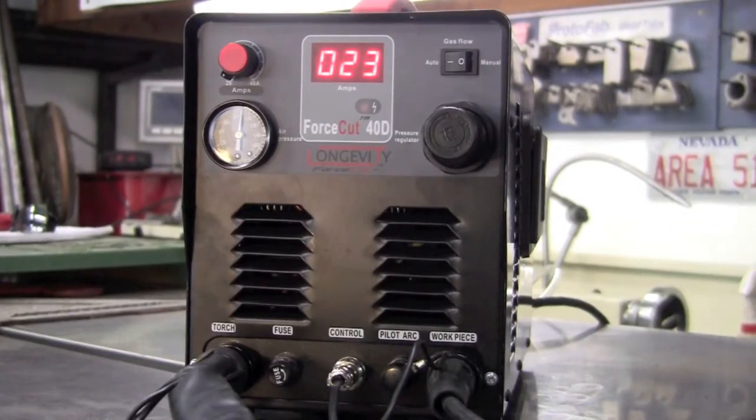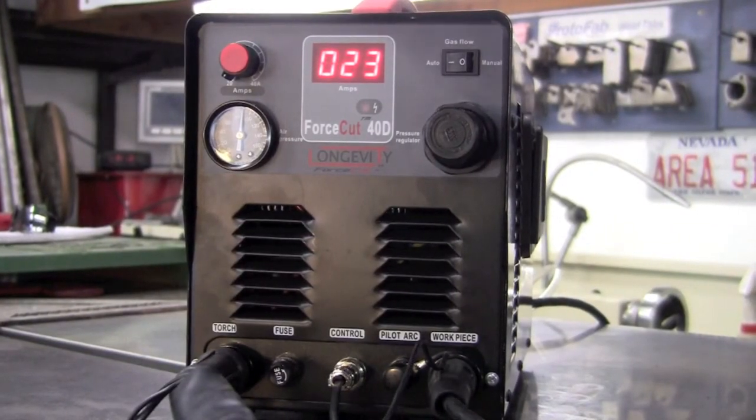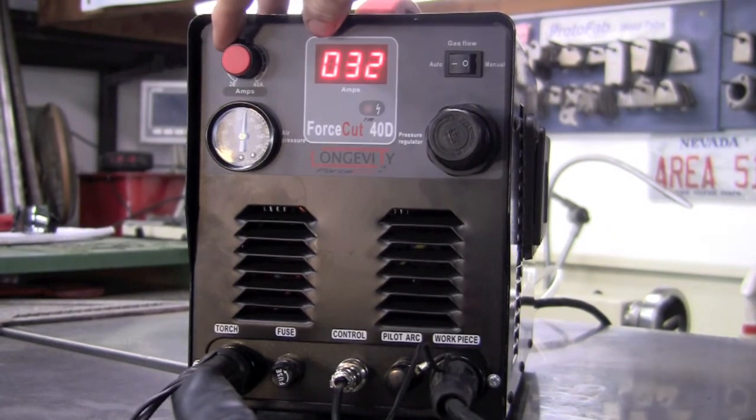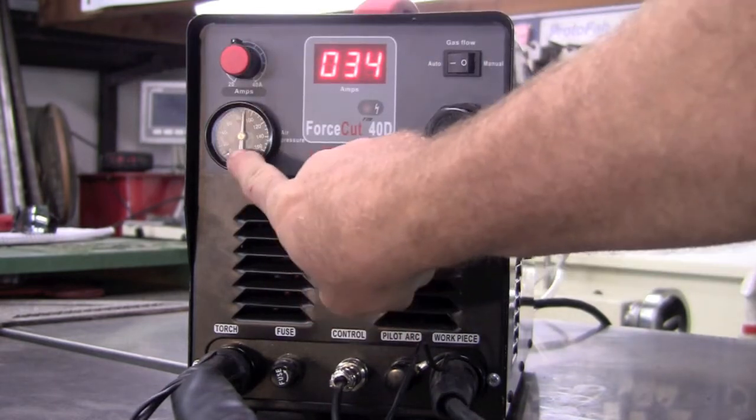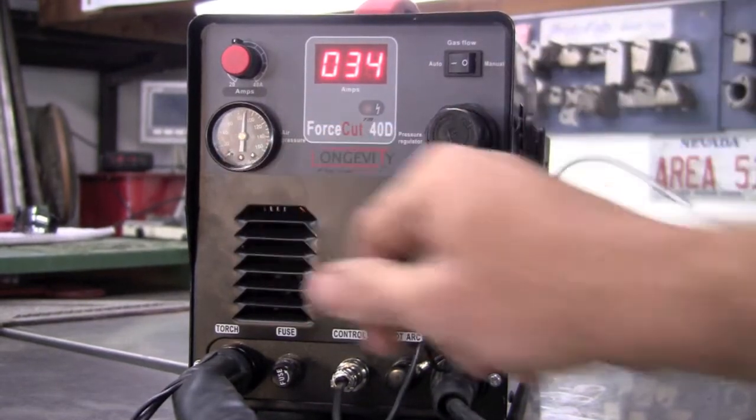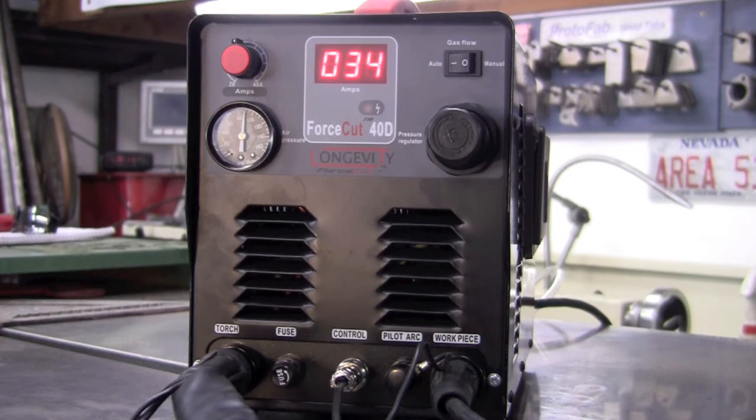So, the front of the panel on the 40D is real simple. You have your amperage adjust, anywhere from 20 to 40 amps. You have your air pressure, which standard air pressure that you want to cut with is about 80. When you're trying to use max capacity of the machine, it's always good to maybe jump it up to maybe 90, 95, even 100 at times.